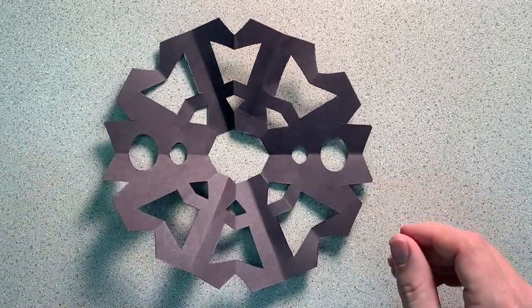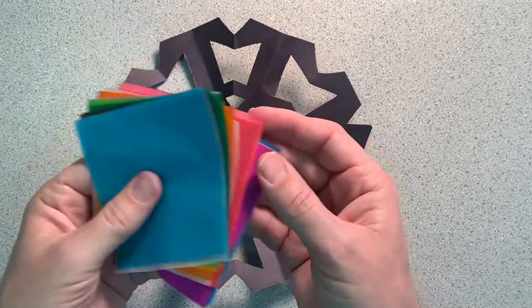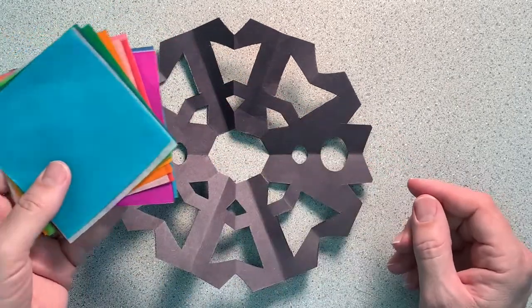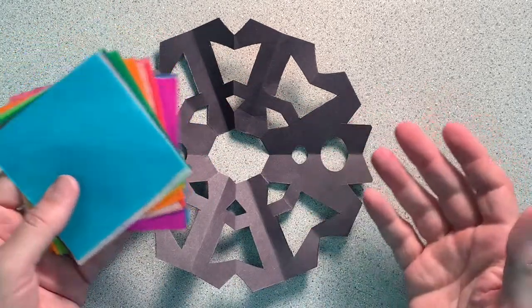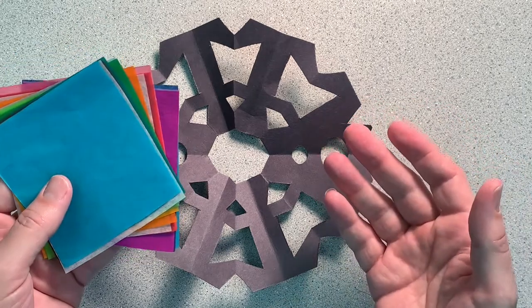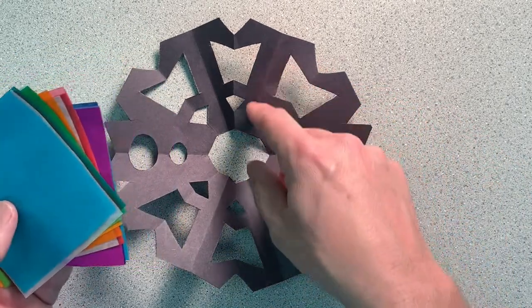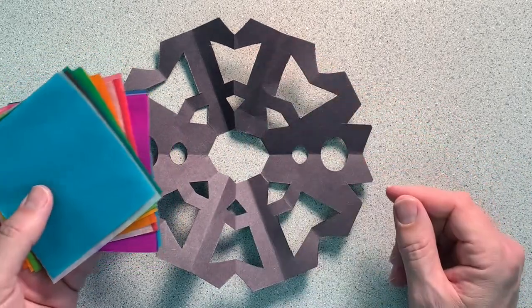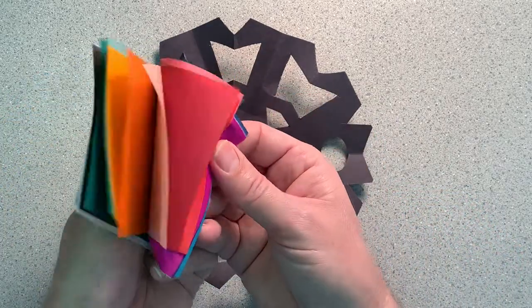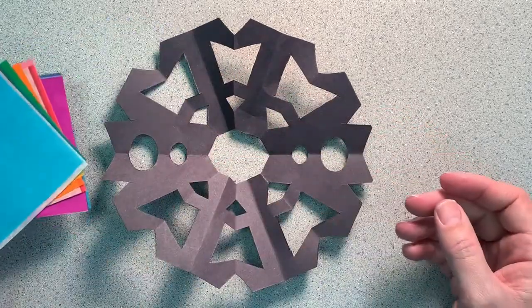Now it's time to start gluing the colored tissue paper on top of all of the openings of our snowflake. Because we're trying to make it look like a stained glass snowflake. The black paper represents the metal that's holding all the glass together and the tissue paper represents the colored pieces of glass.